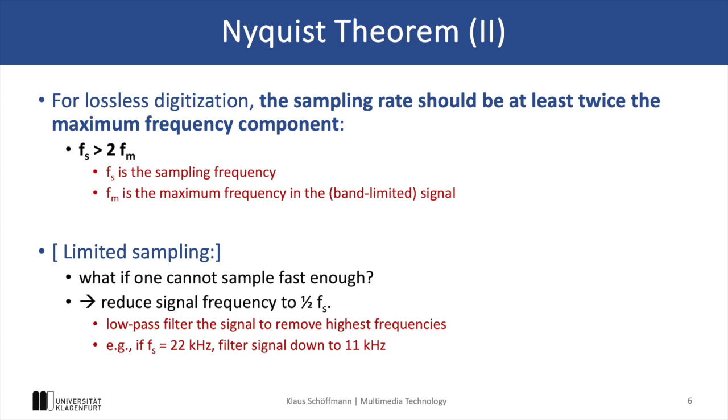And if the signal cannot be sampled fast enough, then we can reduce the signal frequency by using a low pass filter, which only lets low frequency pass and cuts off higher frequency to avoid an aliasing effect. So this allows us to filter a signal from 22 kilohertz down to 11 kilohertz.